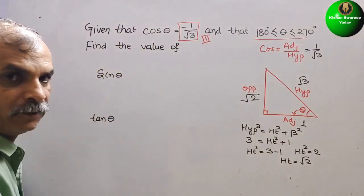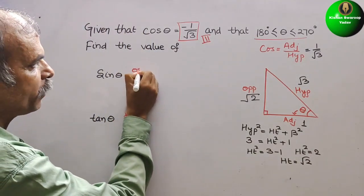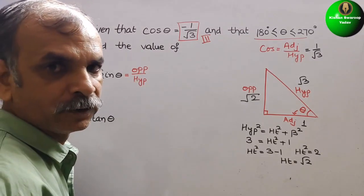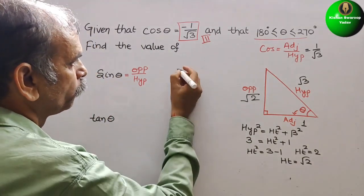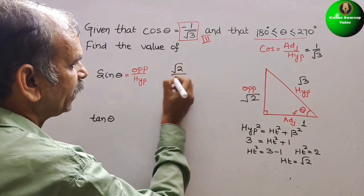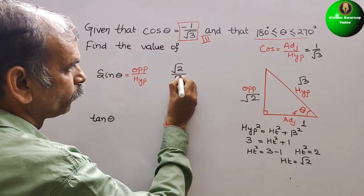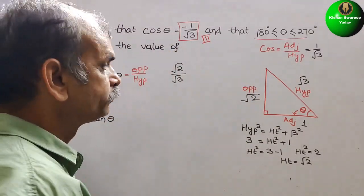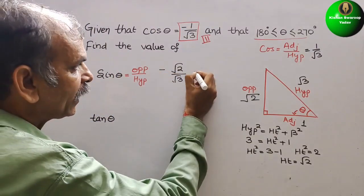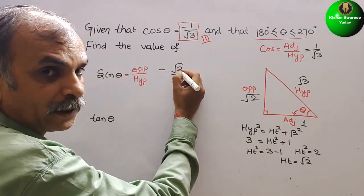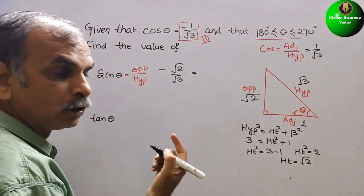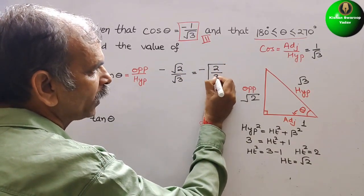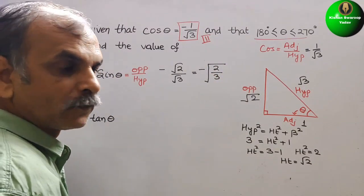Now for sine theta: sine is opposite by hypotenuse. The opposite is root 2 and the hypotenuse is root 3, so we write root 2 by root 3. And in the third quadrant, sin is negative, so here we will write minus. Since both numerator and denominator have roots, we can simplify: that is equal to minus root 2 by 3, written as minus root over 2 by 3.